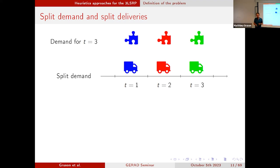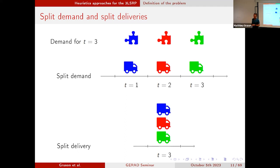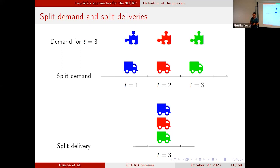We also consider the possibility of split deliveries. Split deliveries mean it's not just one truck that can visit a customer in a specific time period — it can be several trucks. So in period three, I would have one truck to deliver the blue item, one truck to deliver the red item, and one truck to deliver the green item. We consider both possibilities at the same time, just one of them, or none of them, and we wanted to see what the gains are with those splitting possibilities.